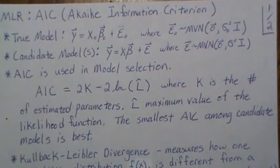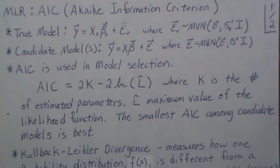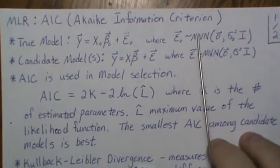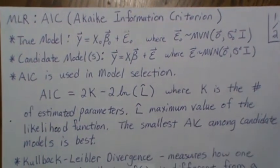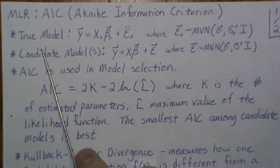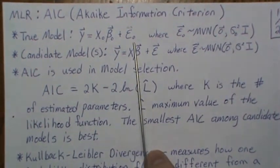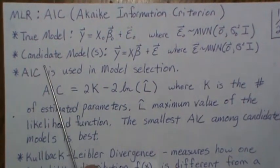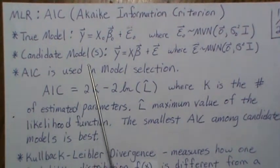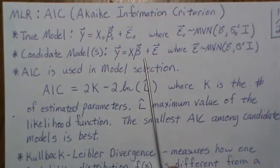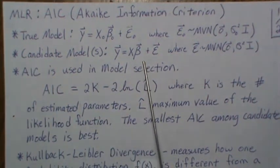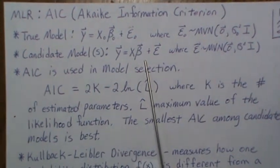In this video we're in the multiple linear regression setting and we're going to look at the AIC, the information criteria named after the statistician Akaike. The setting is that there's some underlying true model that we don't know, and we're going to suggest several candidate models.